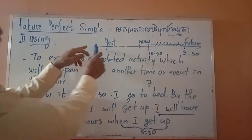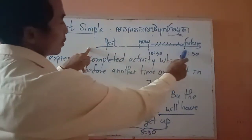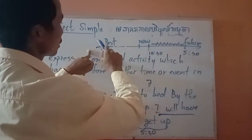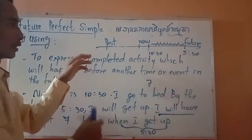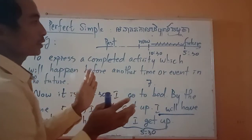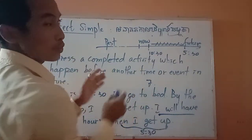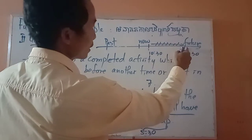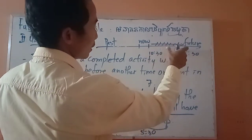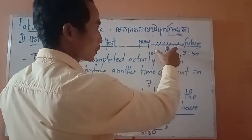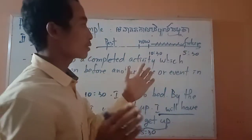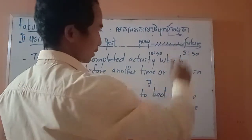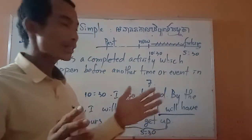In this layer graph, you see future, now, and past. Future perfect simple is used to express the action that will happen before the future simple — a time in the future or an action in the future.